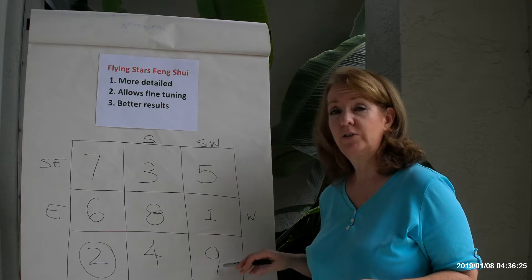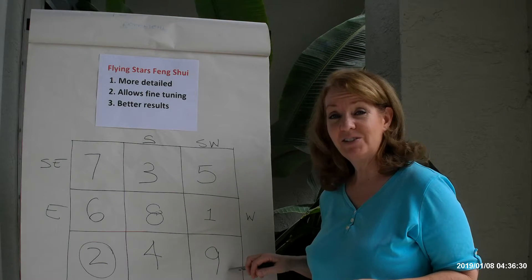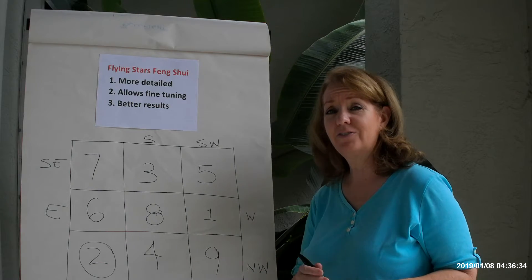Or you could put a picture of your mentor in the Northwest area of your office in a red frame. Those are ways to use feng shui activation to get the best out of the number 9 star for 2019.